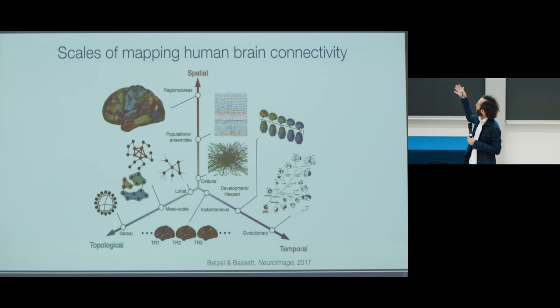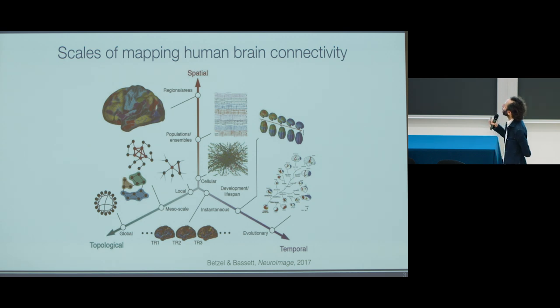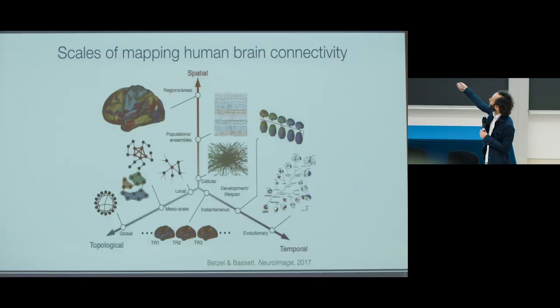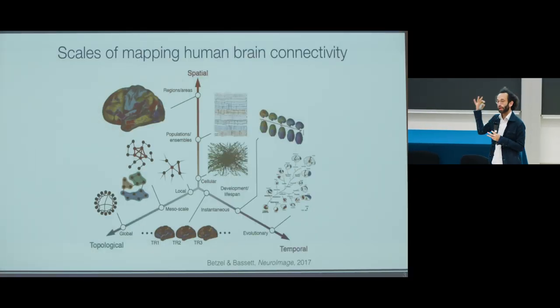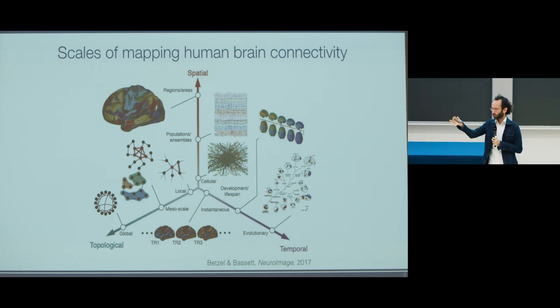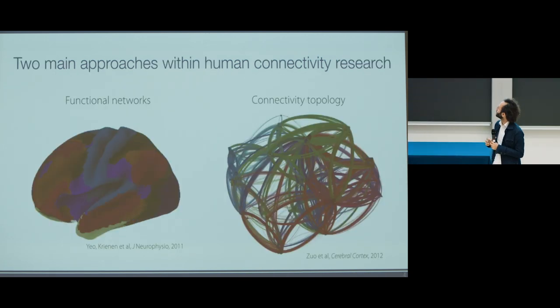There are numerous scales for mapping, beautifully illustrated by Betzel and Bassett's review. There are multiple different scales and characteristics which we can use for mapping the human brain. Two of the most common are looking at different regions, areas, or networks in a spatial sense, and looking at graph topology, which has already been addressed in the prior talk.